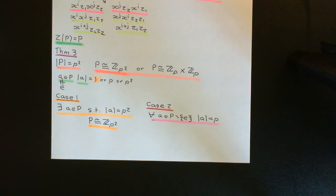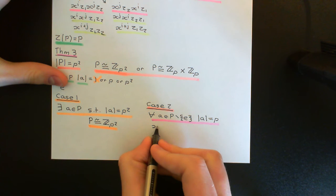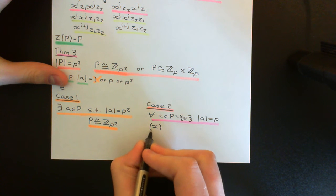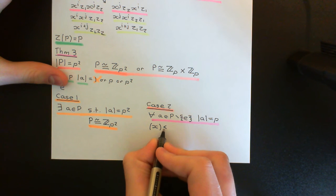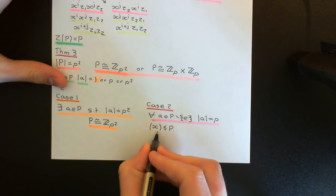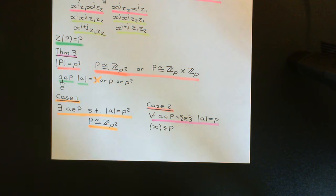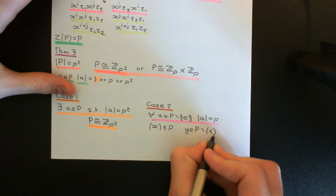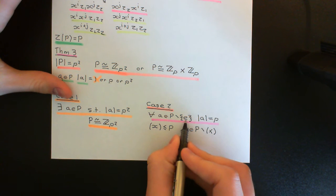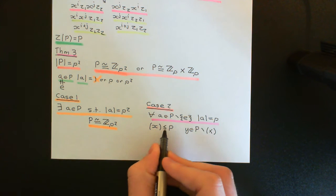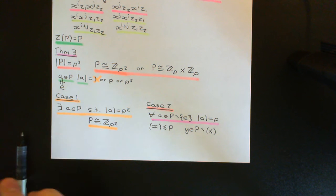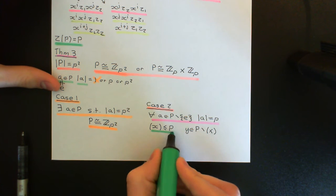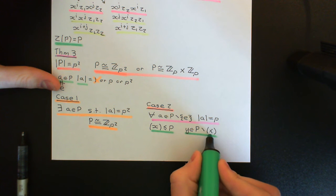If all elements of the group apart from the identity have order p, then if I pick some arbitrary element — which I'll call little x — and generate the cyclic subgroup generated by x, this is going to have order p. So this is a subgroup of capital P of order p. Now I want to find an element which we'll call little y, which is in capital P but is outside of the cyclic subgroup generated by x, and therefore in particular is not equal to the identity element. When I picked x, I assumed it wasn't the identity element — I assumed I was picking an element of order p.